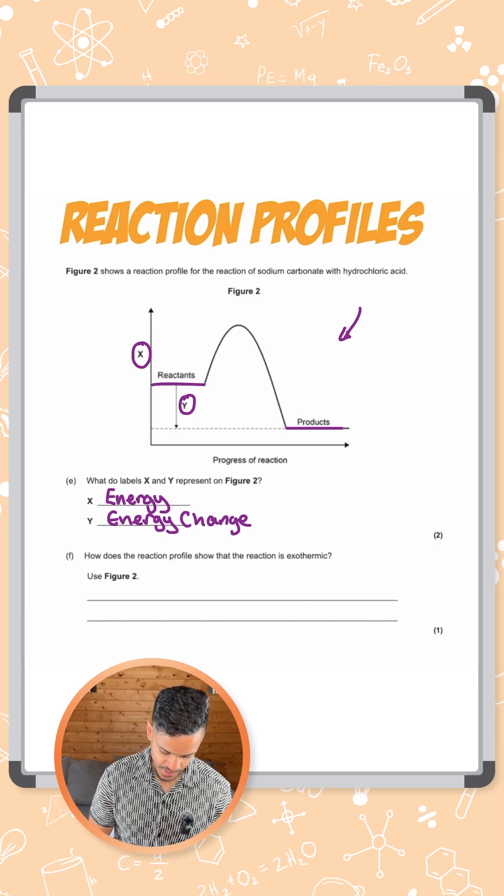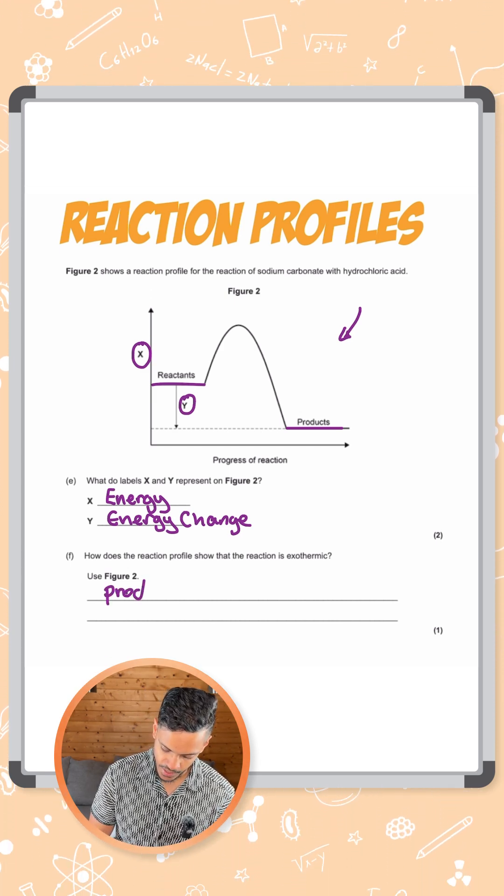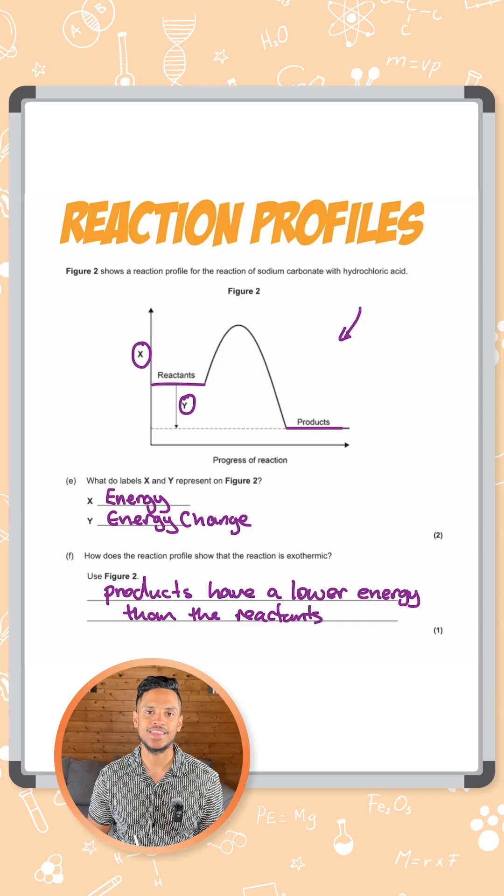So this is actually an exothermic reaction because products have a lower energy than the reactants. That's how you get the mark there.